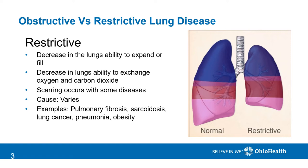Common examples of restrictive lung diseases are pulmonary fibrosis, sarcoidosis, lung cancer, pneumonia, and obesity. Causes vary, with some being linked to environmental exposures, chronic infection, and autoimmune diseases, while others have no specific cause that can be identified.